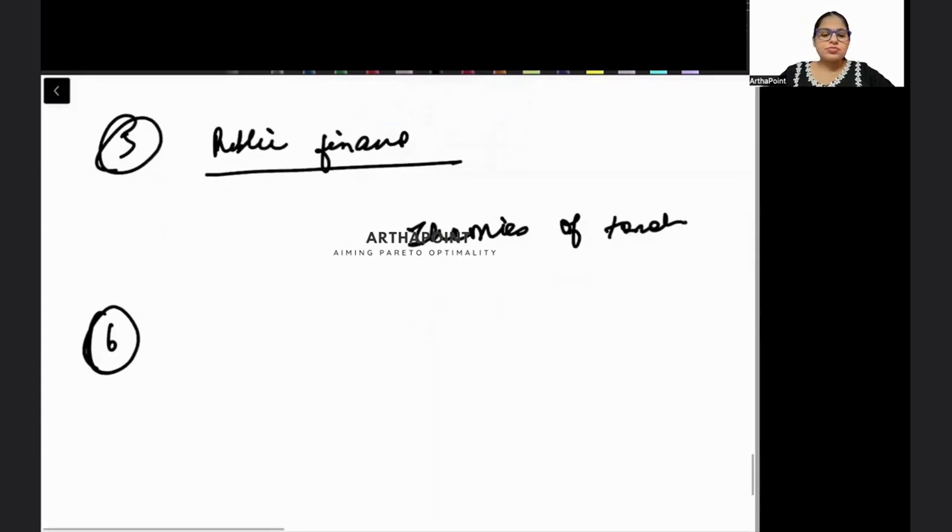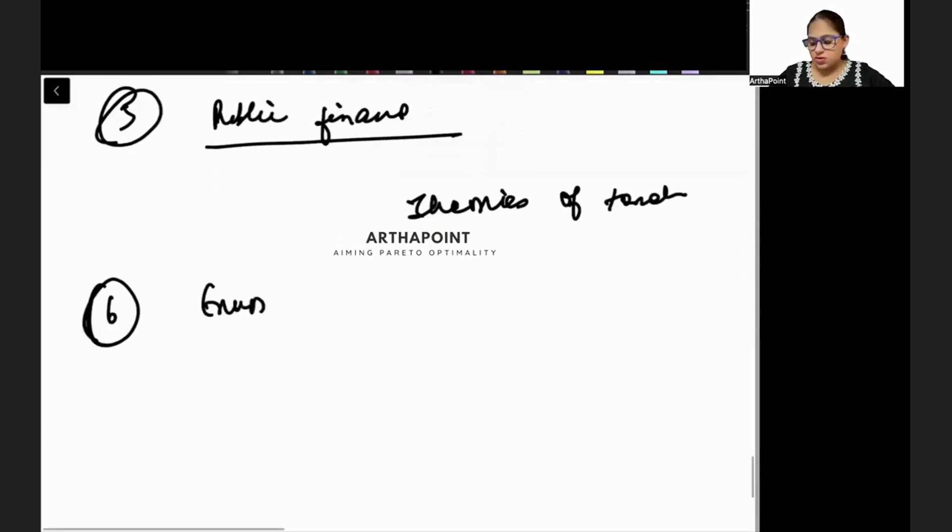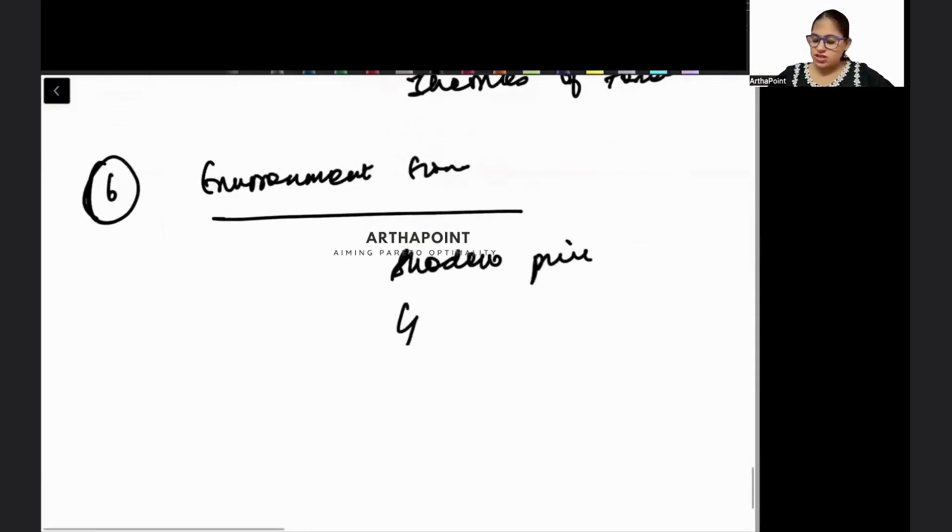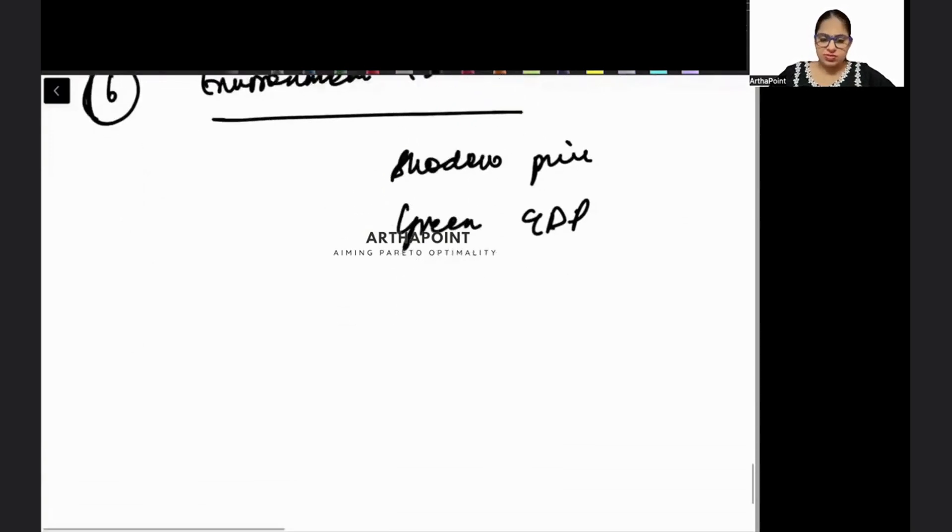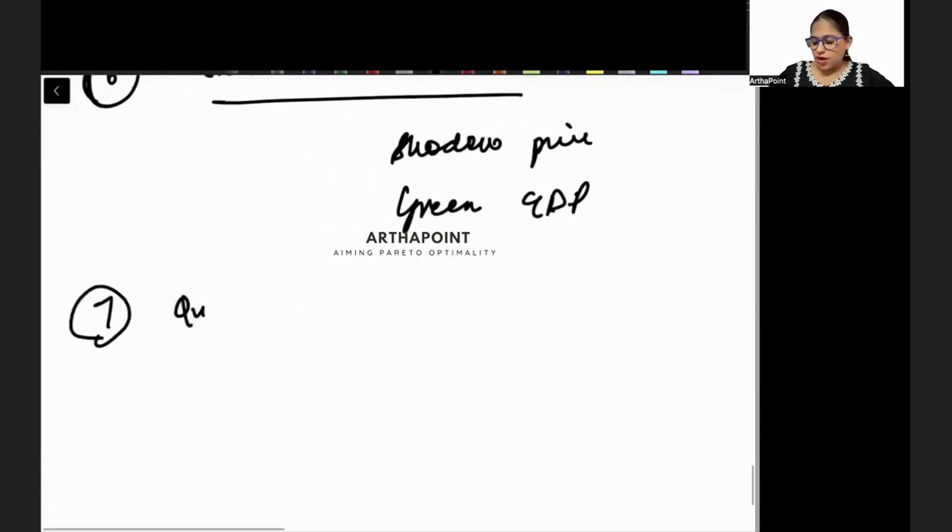And then environmental economics. In this also, don't deep dive too much. Know basic things like what is a shadow price, how is it different from market price, what is green GDP, what are sustainable development goals. What is carbon emission, how is that related to economics? Just know those things well.